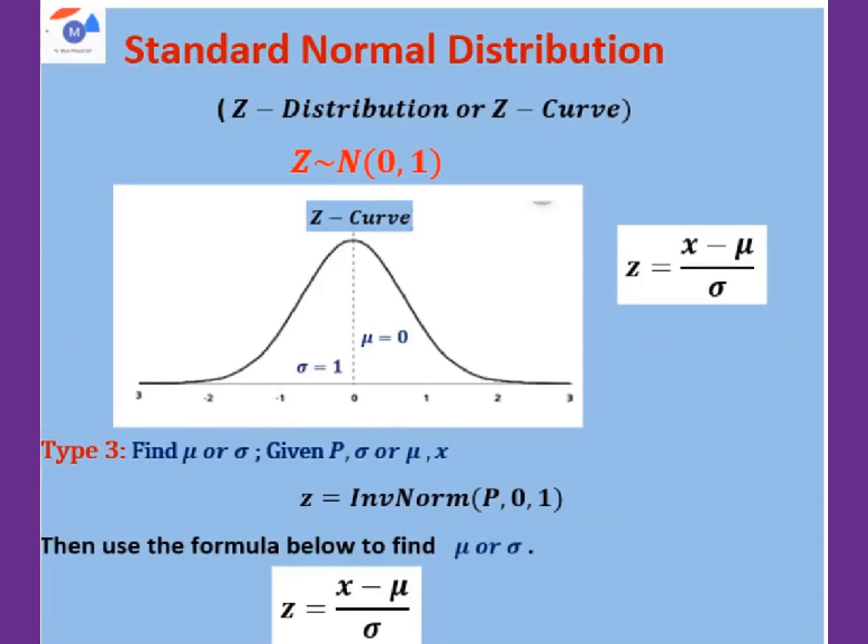If we are looking for the mean or standard deviation, we use the z-distribution or z-curve. You still use the inverse norm, but for the mean you will put 0 and the standard deviation put 1. You will figure out this z-value. For the z-value, you use this formula to figure out that mean or standard deviation.